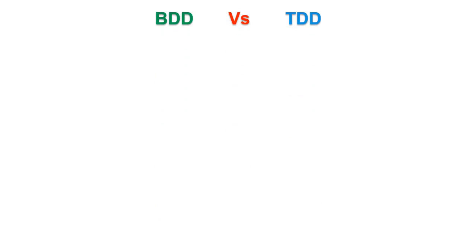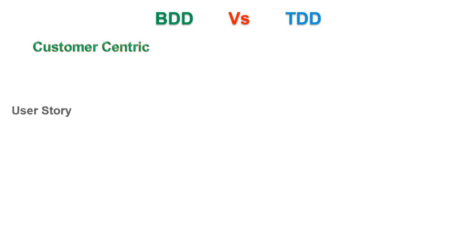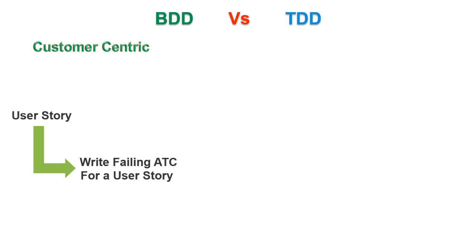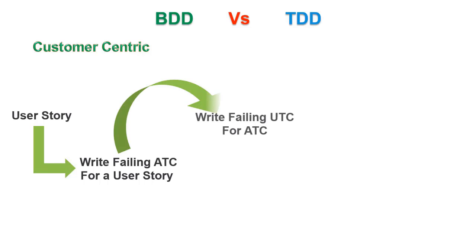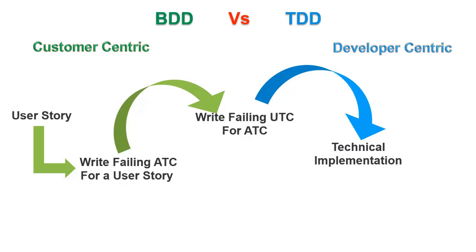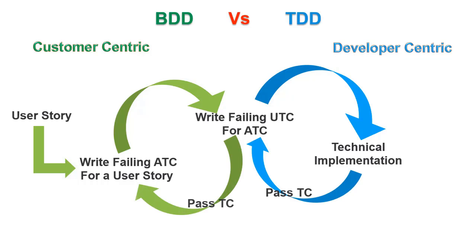Now let me answer your earlier question. BDD is more customer-centric, which begins with a bunch of failing acceptance test cases. Whereas TDD is more developer-centric, which begins with failing unit test cases. BDD is outside, TDD is inside.